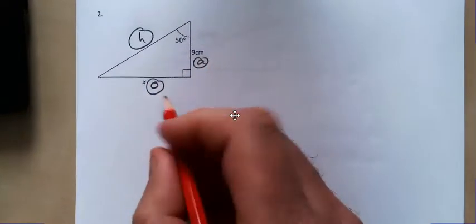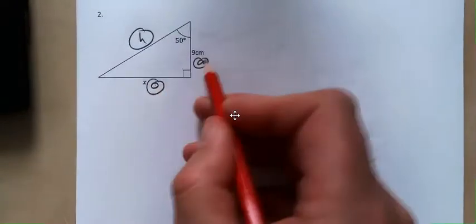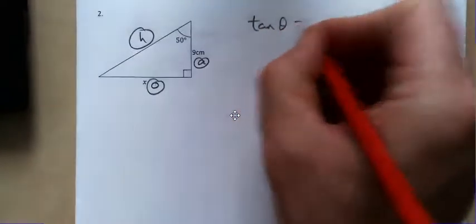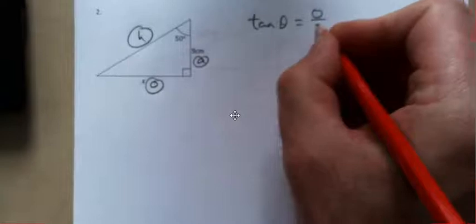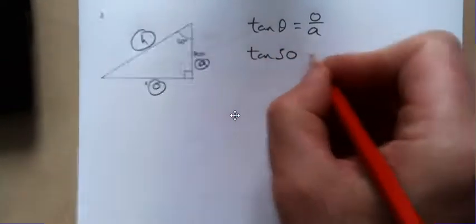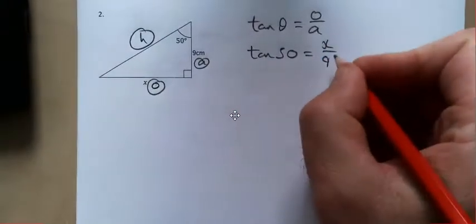Those are three sides. Which one do we have? We have a and we want o so we want the one with o and a. So that's going to be toa which is tan. So we're going to write tan theta equals o over a. Tan 50 equals x over 9.